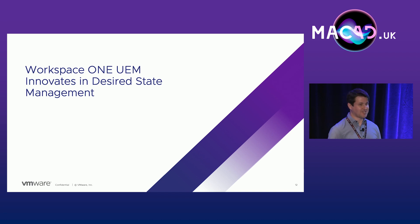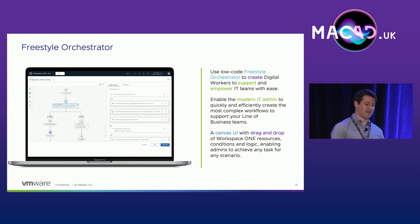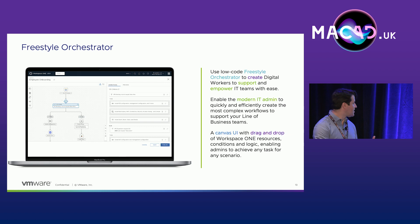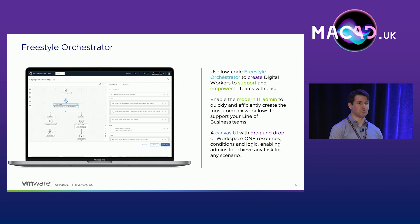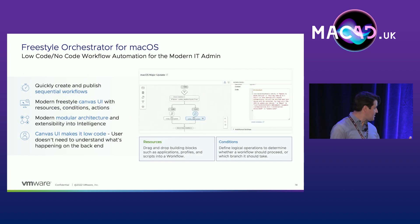I want to showcase how Workspace ONE is actually implementing these principles. The first feature I want to talk about is Freestyle Orchestrator. Freestyle Orchestrator is really centered around creating those complex but independent workflows — it allows you to take any type of configuration with multiple steps or components and create an independent workflow that becomes another assignable object within the platform. It contains two different components: the resources themselves — your apps, scripts, and configuration profiles — and your logical conditions.